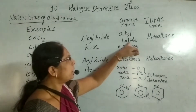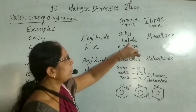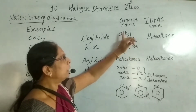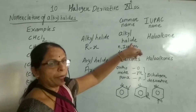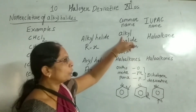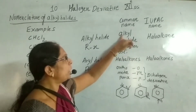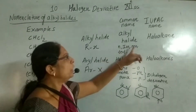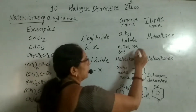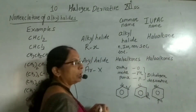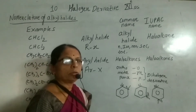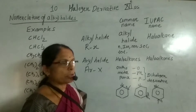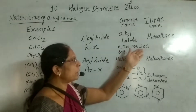Alkyl halides have the common name given by identifying the alkyl group, followed by the word halide. The alkyl group may be normal, iso, neo, secondary, or tertiary, depending upon the type of the alkyl halide. The alkyl halide itself may be primary, secondary, or tertiary, and so it may have different type of prefix.